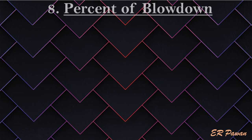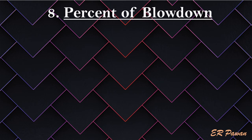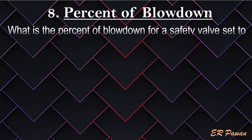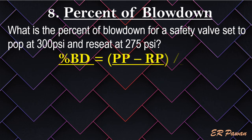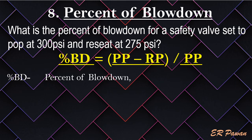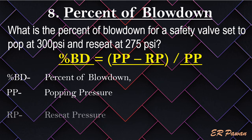Formula 8 — Percent of Blowdown. What is the percent of blowdown for a safety valve set to pop at 300 pounds per square inch and reseat at 275 pounds per square inch? Percent of blowdown equals popping pressure minus reseat pressure divided by popping pressure. Where PP = popping pressure, RP = reseat pressure. Let's put the value in the formula.